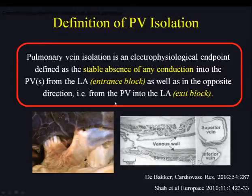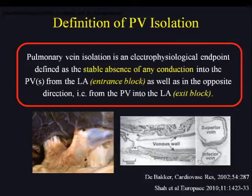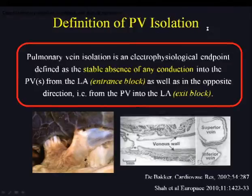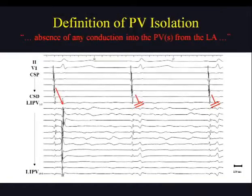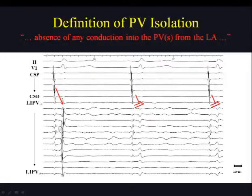In this anatomical picture, you can see the circular sleeves or the muscle surrounding the endothelium of the vein, which is responsible for the arrhythmia and for the generation of local PV potentials. The definition implies several parts: it is the absence of any conduction into the PVs from the left atrium. We assess this with circular mapping catheters — either a conventional lasso catheter or the PVAC catheter — meaning that during antegrade conduction, you have elimination of the sharp PV potentials during the procedure.